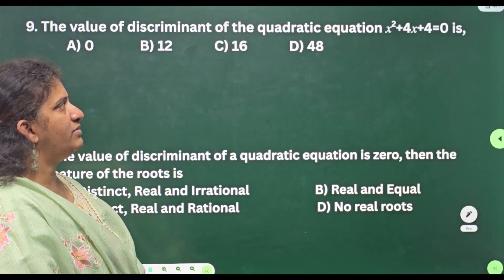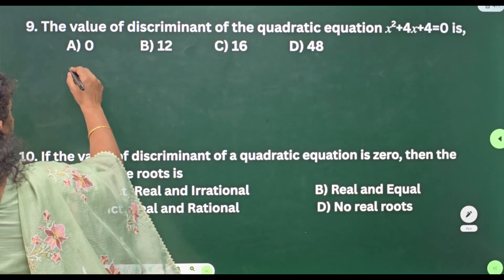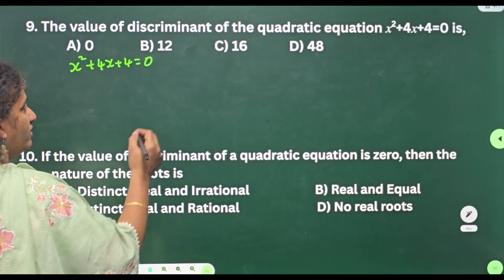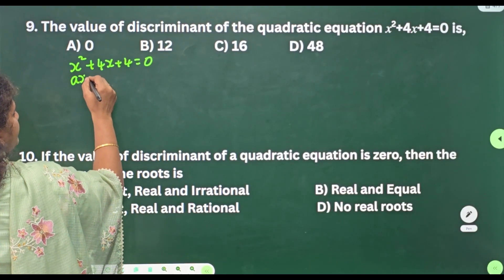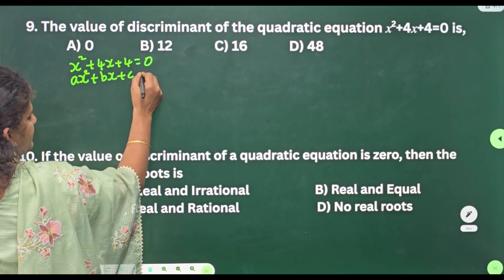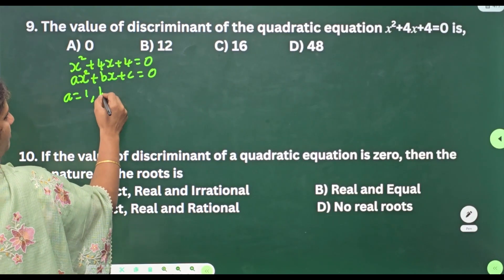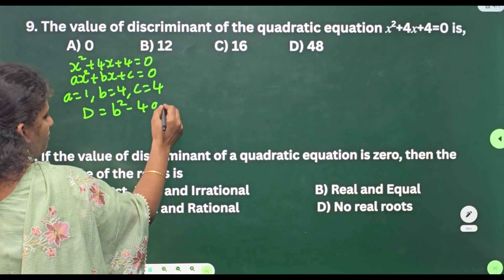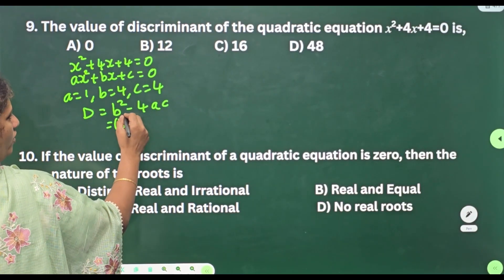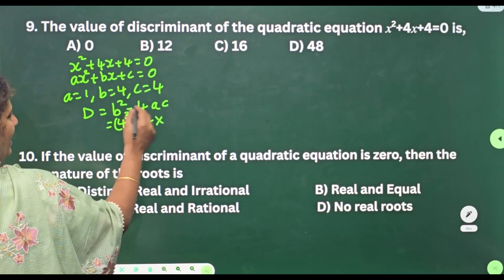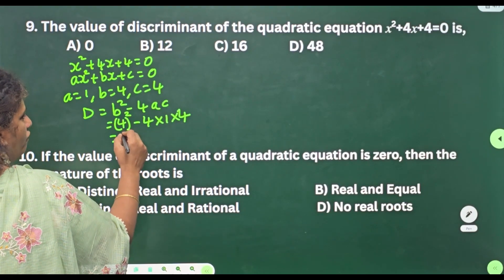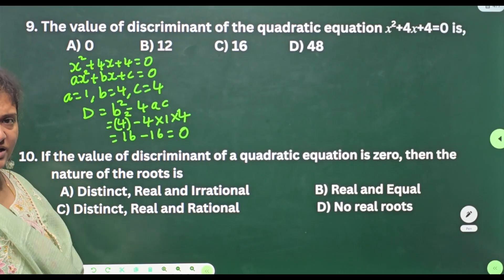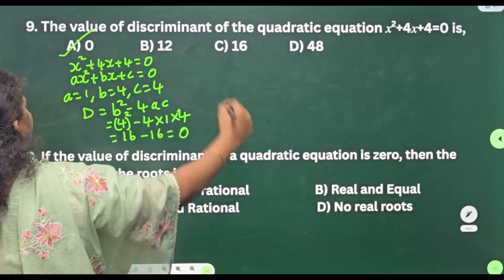Ninth one: the value of discriminant of the quadratic equation x² + 4x + 4 = 0 is — what is the value of discriminant? Compare with the standard form x² + bx + c = 0, where a = 1, b = 4, c = 4. We know discriminant D = b² − 4ac. Substitute: 4² − 4(1)(4) = 16 − 16 = 0. Discriminant value is option A: 0.